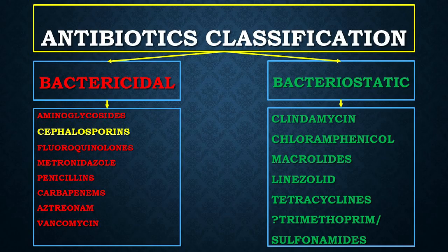Let's start from the very beginning so we have a structure. This is the classification of antibiotics in regards to bactericidal and bacteriostatic effect. On the USMLEs they like asking these questions, especially on Step 1 and Step 3 — which antibiotic is bactericidal and which is bacteriostatic. The bactericidal antibiotics are the aminoglycosides, cephalosporins, fluoroquinolones, metronidazole, penicillins, carbapenems, aztreonam, and vancomycin. The bacteriostatic antibiotics are clindamycin, chloramphenicol, macrolides, linezolid, tetracyclines, and TMP-SMX. These are mostly bacteriostatic, though there is some controversy as to whether they have bactericidal effect too — but remember they're mostly bacteriostatic.